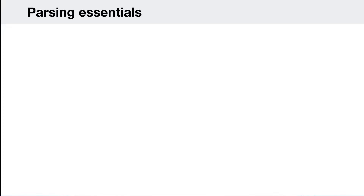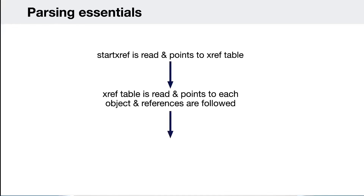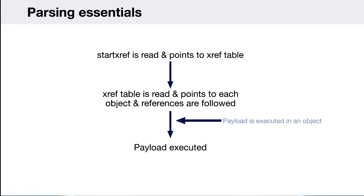Here's an ultra-high-level view of how a PDF is parsed. The startxref points to the xref table, which then lists all the objects. The PDF client looks through all of the xref table to gather all the objects. Any injection is probably going to occur within an object itself, so our payload will be executed within an object when that object is executed and the document is rendered.